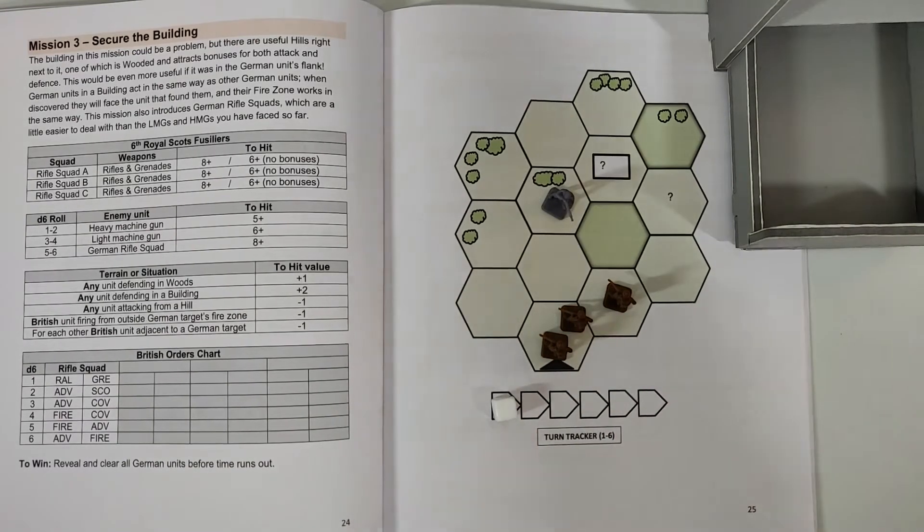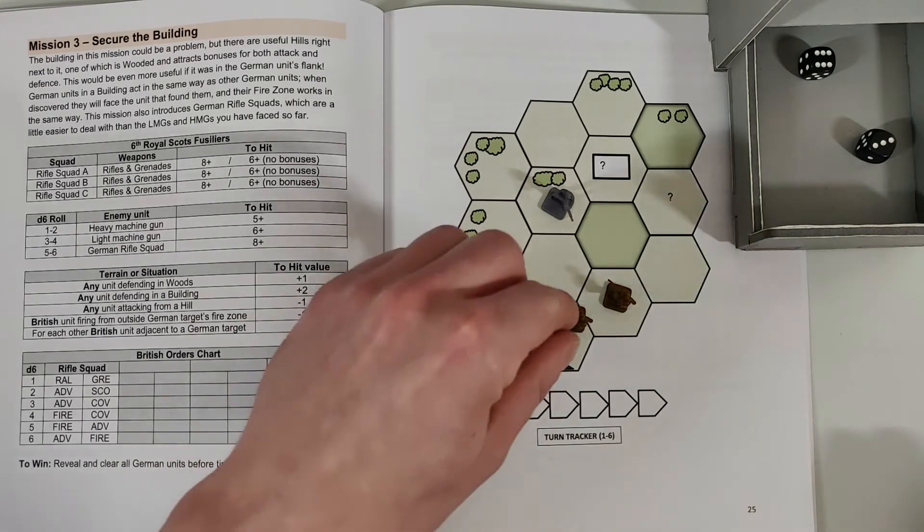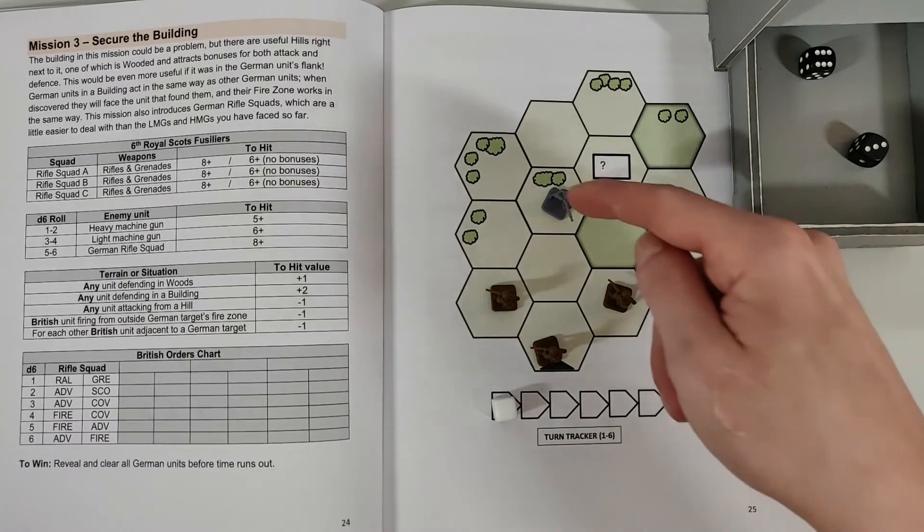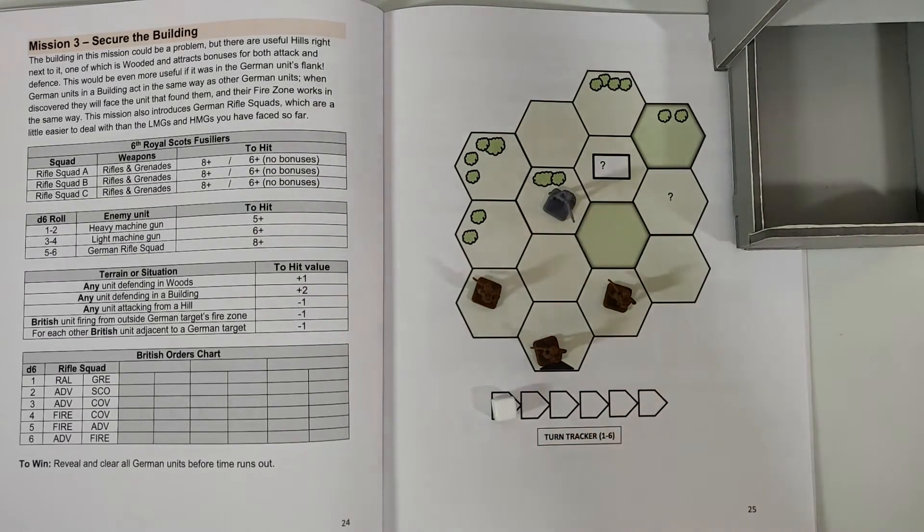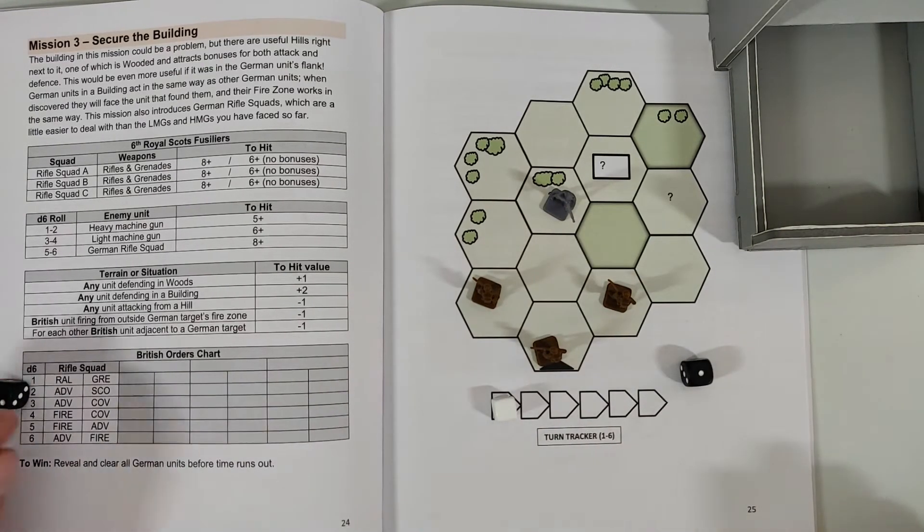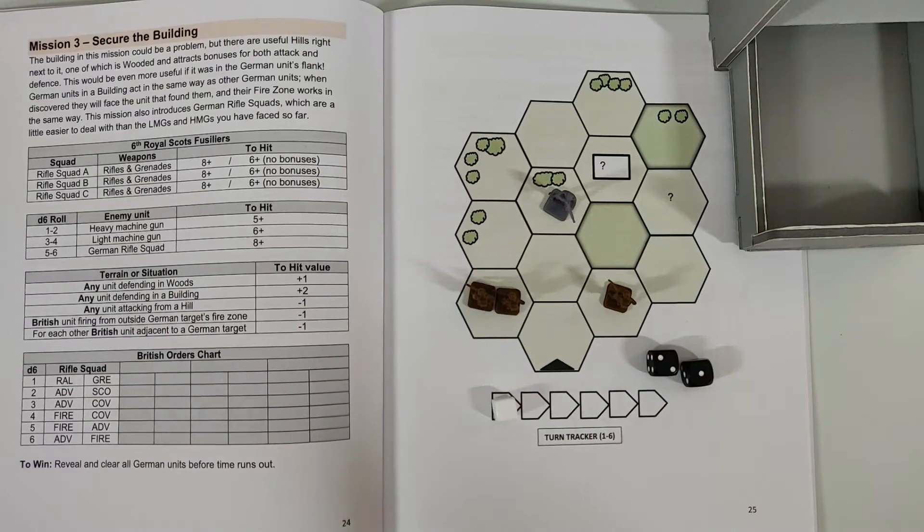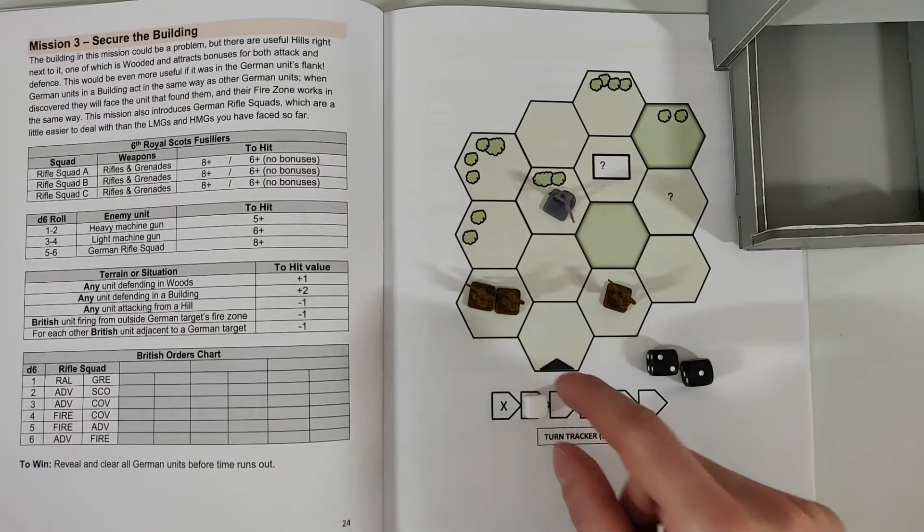Alright, so we have the next squad member. We roll six and three, which is advance and fire and advance and cover, so doesn't really matter which one we use because we're not gonna be able to fire yet. If we were to move right in here we could fire, but then we would also take fire next turn and I want to avoid that. So I think I'm gonna take the safe way to the left there. And we roll for the last one, we have advance and scout and rally and grenade, so we're gonna go ahead and use the two, which is advance and scout. And I'm gonna go ahead and just move him up here, so the scouting is wasted.